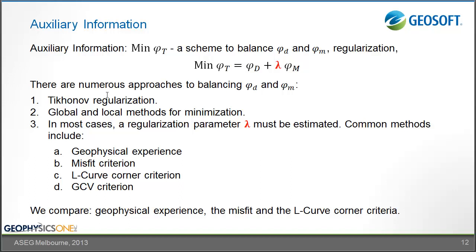There are many ways to choose the regularization parameter. A common approach is Tikhonov regularization, minimizing the weighted sum of the two terms. One can use geophysical experience, looking at different parameter choices; a misfit criterion defining a target data misfit; the corner of the L-curve (the point of maximum curvature); or generalized cross-validation. In this presentation we will compare geophysical experience with the misfit and the L-curve corner criteria.